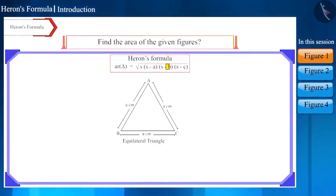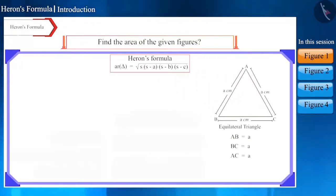Can you tell what will be the value of A, B and C here? All the three sides of the triangle are equal, so the value of all three will be A. Now the formula will be square root of S times (S minus A) times (S minus A) times (S minus A), which will be equal to square root of S times (S minus A) raised to the power of 3.